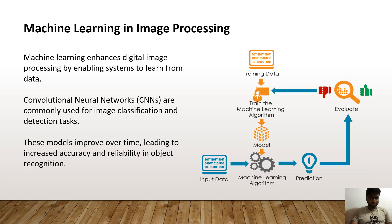Machine learning enhances digital image processing by enabling systems to learn from data. Convolutional neural networks are commonly used for image classification and detection tasks. Different models improve accuracy and reliability in object recognition. This is the main block diagram representing machine learning in image processing, where training data is passed into the machine learning algorithm.